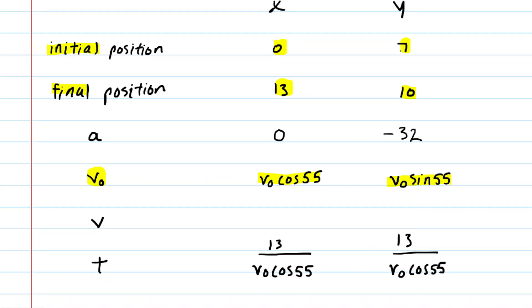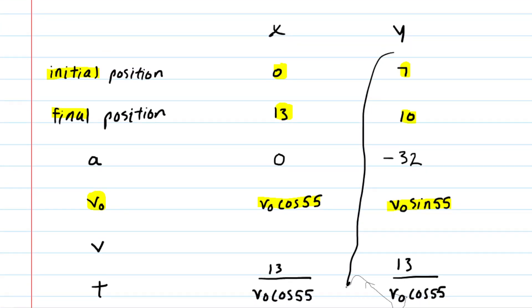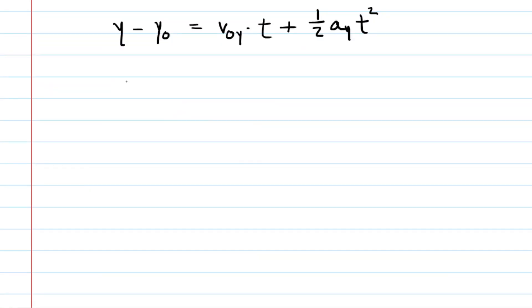Now we're going to use the same kinematics equation, but this time we're going to plug in the information from the y-direction. So let's go ahead and do that right now. So here is that equation. The final y-coordinate was 10. The initial y-coordinate was 7. The initial velocity in the y-direction was the v-naught times sine of 55 degrees. And then the time, well, we just figured out that expression. That was the 13 over v-naught cosine of 55. So plug that in very carefully. And then we have plus one-half times the acceleration in the y-direction was negative 32 feet per second squared. And then the time, again, is this 13 over v-naught cosine of 55 squared.